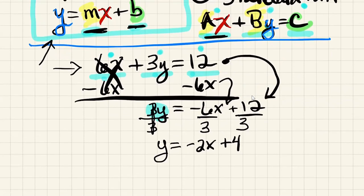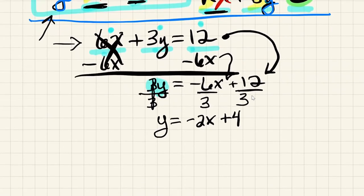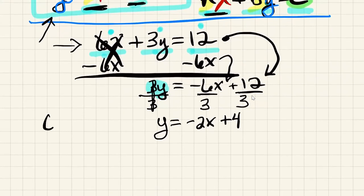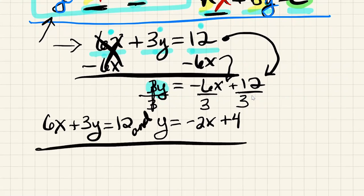So although they look different, the equation 6x plus 3y equals 12 and the equation y equals negative 2x plus 4 are equivalent linear equations. Which means if I put these on a graph, they would make the same exact straight line.